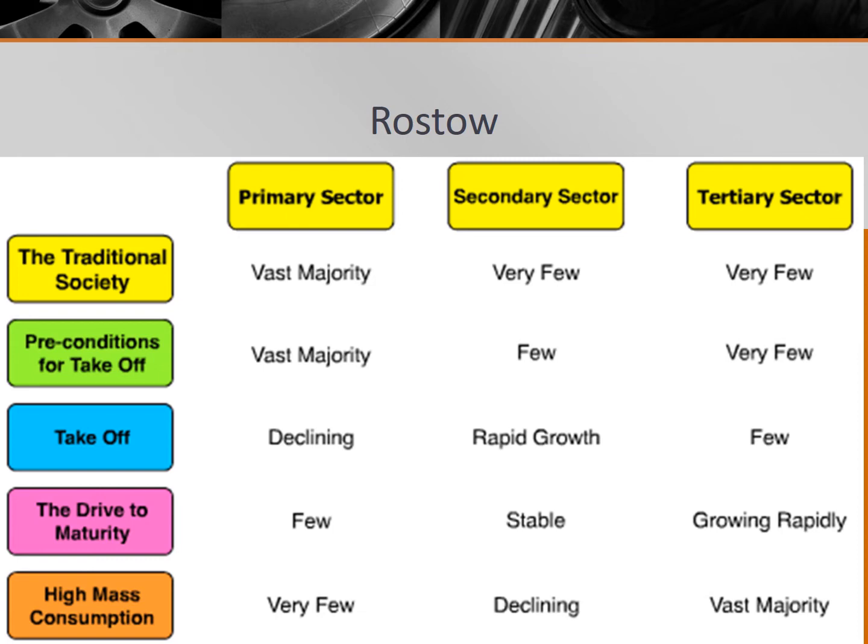The age of mass consumption, also known as high mass consumption, marks the fifth and final stage of Rostow's model. It is characterized by a highly urban, tertiary-dominant economy. Most people can accumulate wealth to such a degree that they don't need to worry about subsistence needs. The U.S. has been in this stage since the post-World War II period of the 1950s, and Japan would be another country to use as an example.